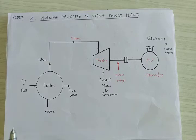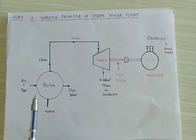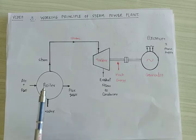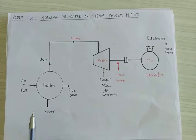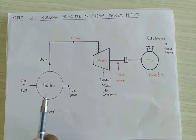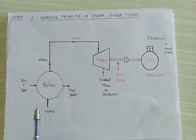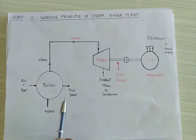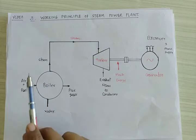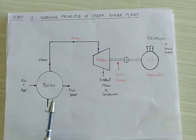What is the working principle of this plant? It converts the chemical energy of fuel — like coal or gas — into mechanical energy, which can be further converted into electrical energy by using an electrical generator. This is called a steam power plant.